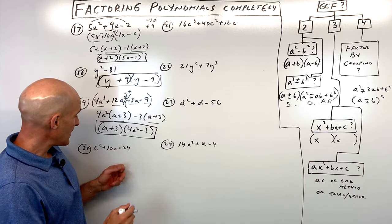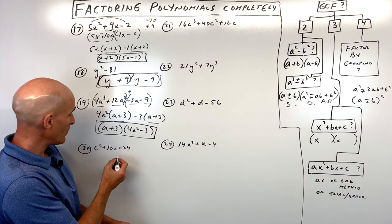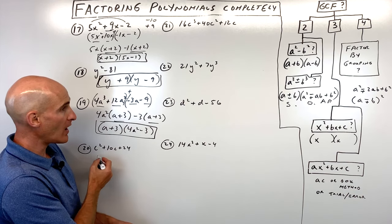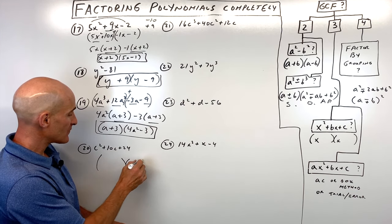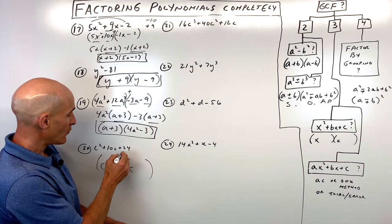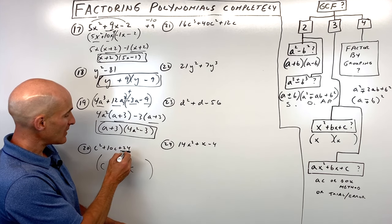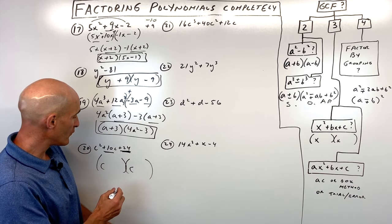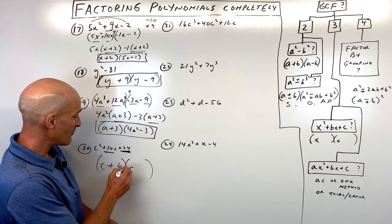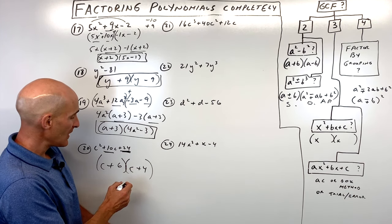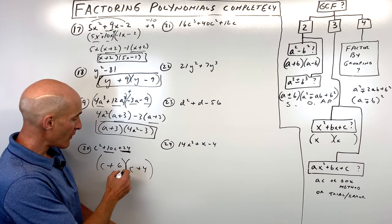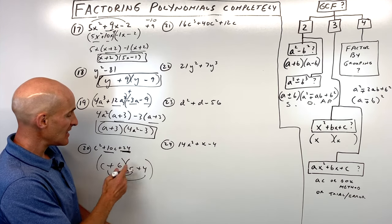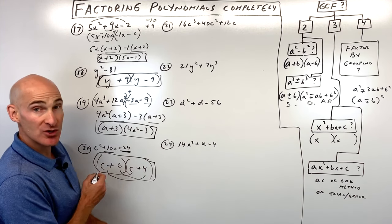Number twenty has a trinomial with leading coefficient 1 and no greatest common factor. What two numbers multiply to positive 24 but add to 10? That's positive 6 and positive 4. You can check by foiling — 6c and 4c give you 10c, and you get back to the original polynomial.